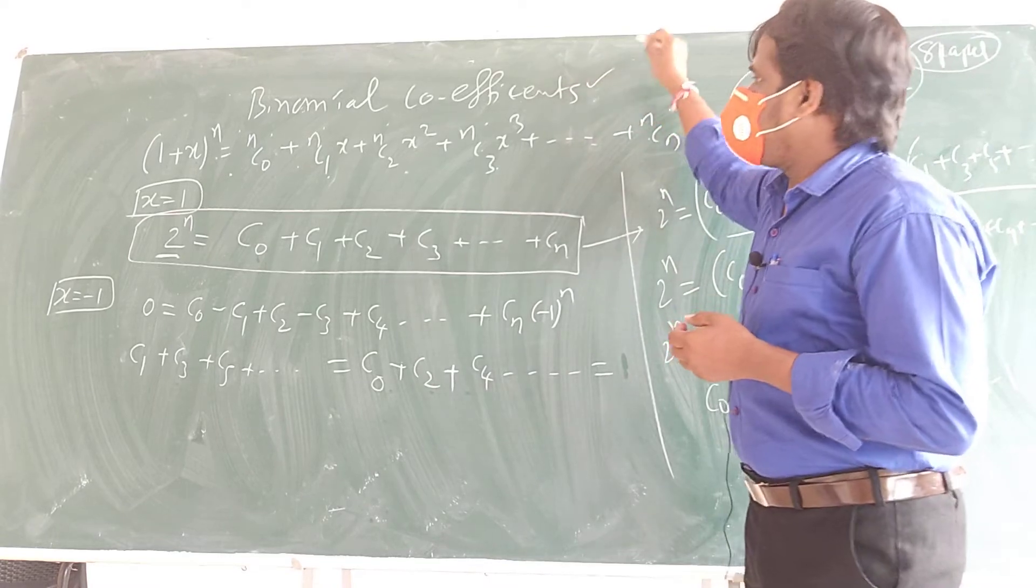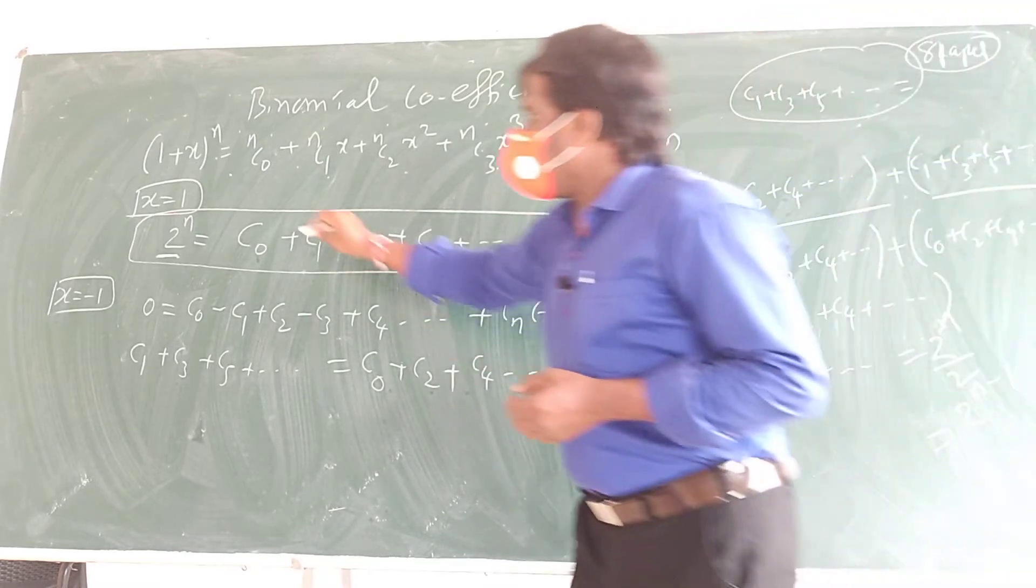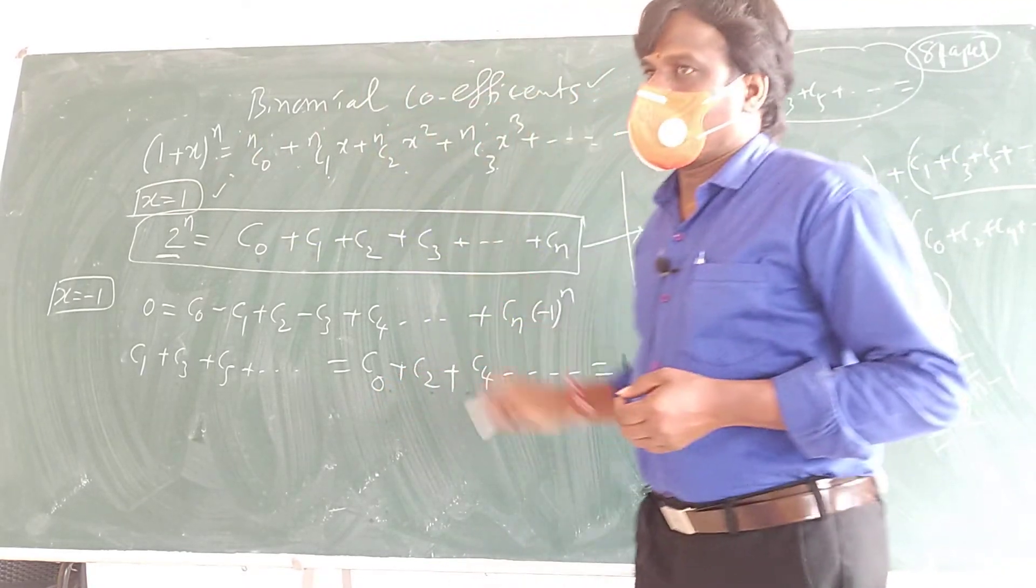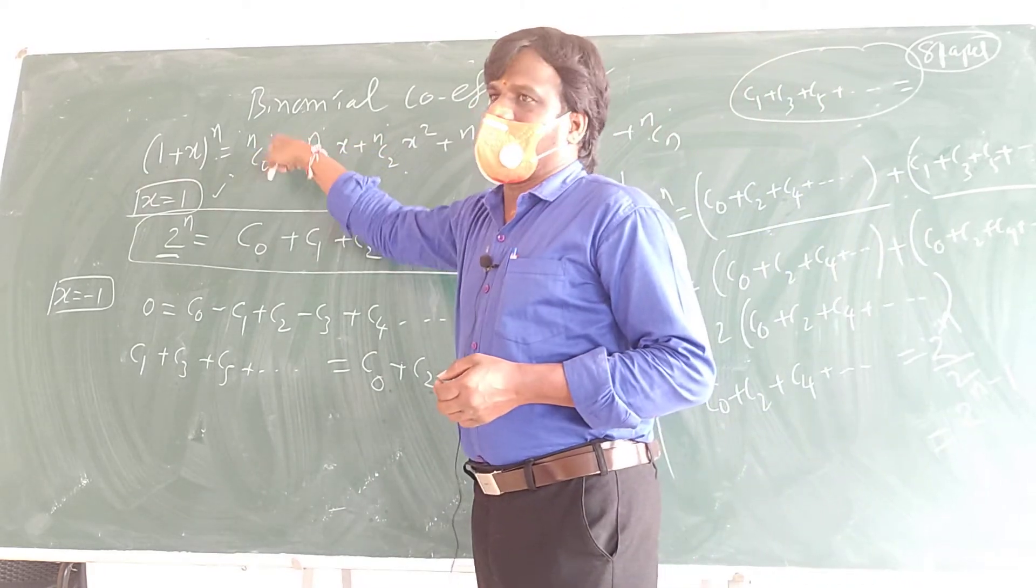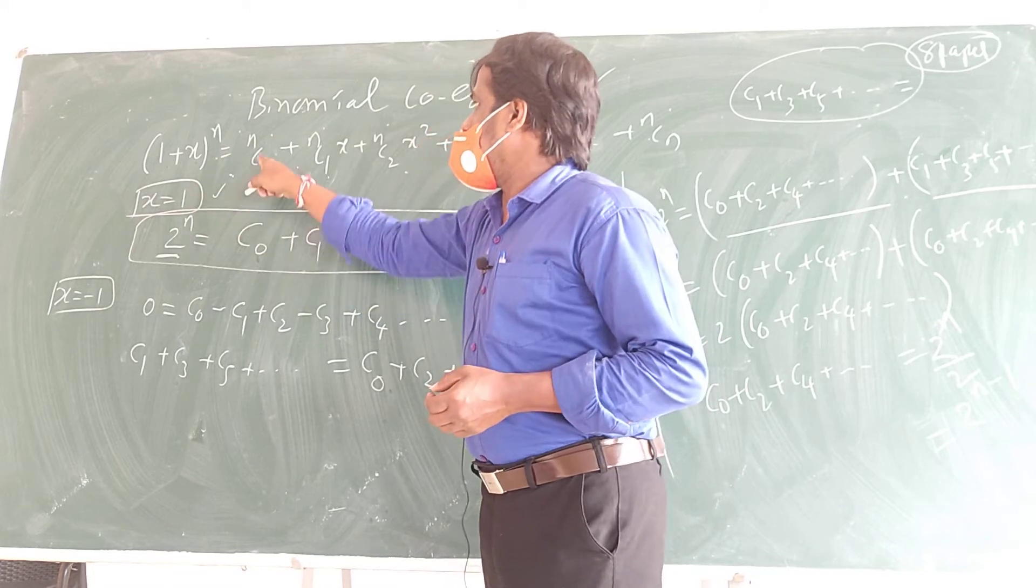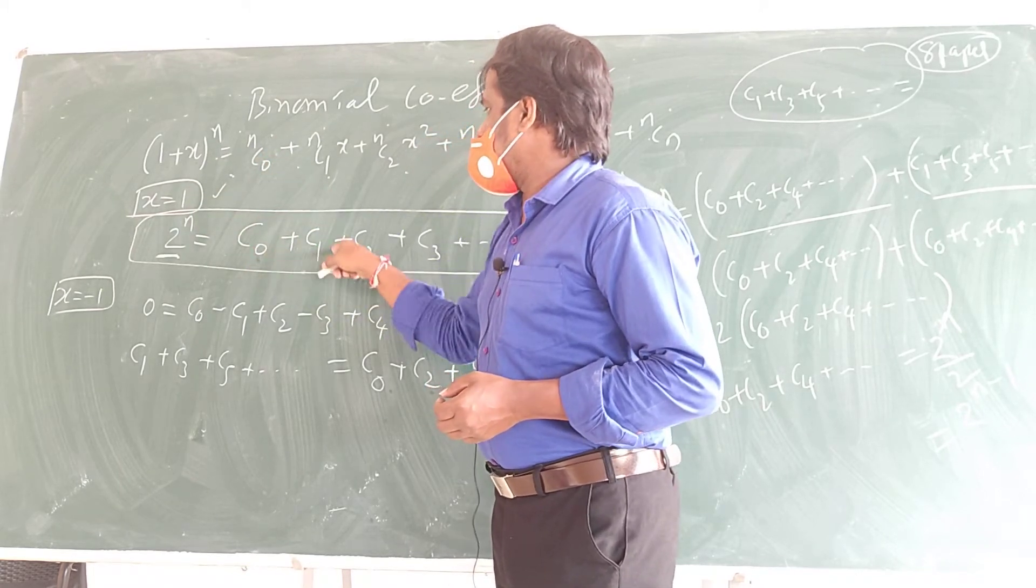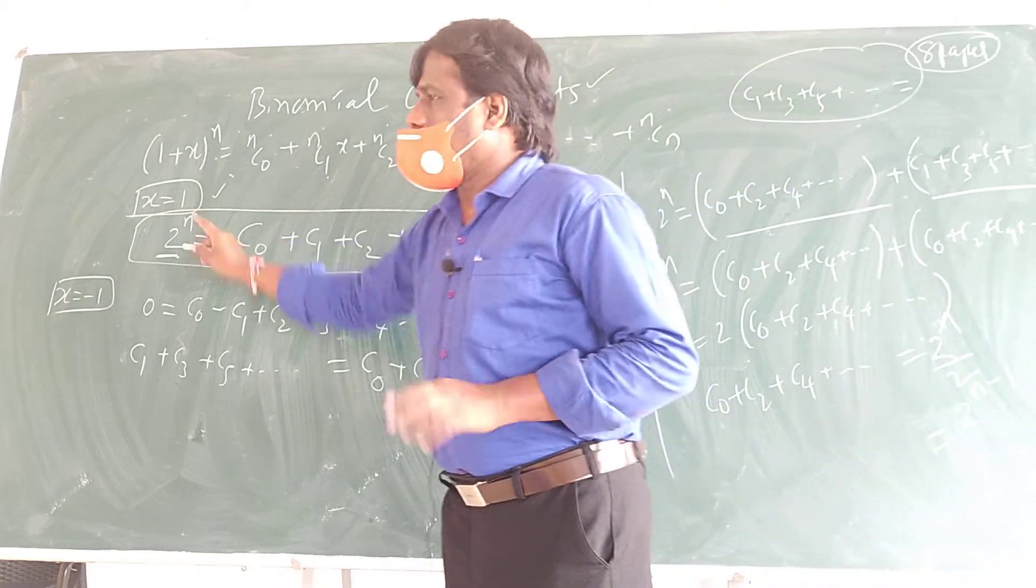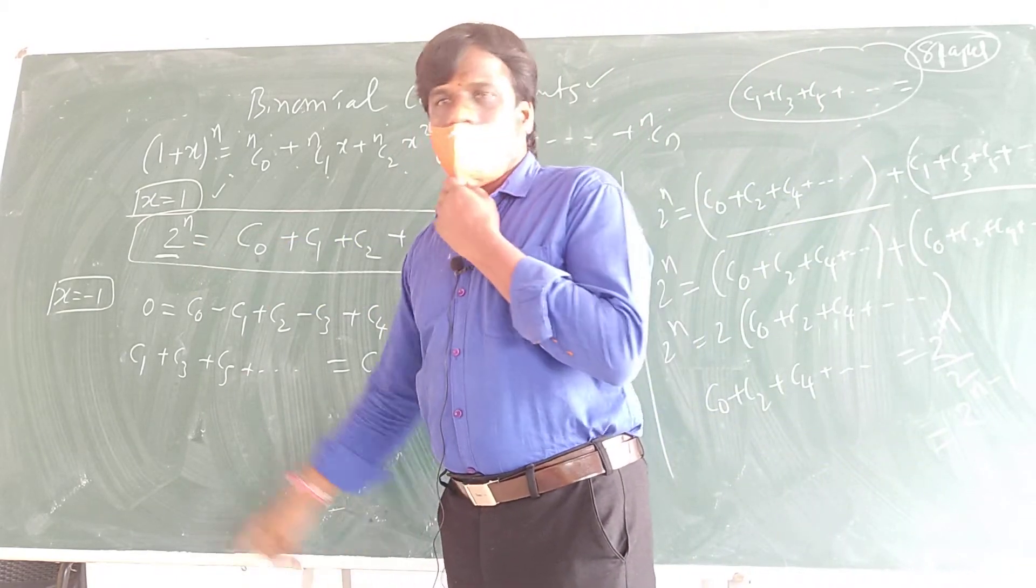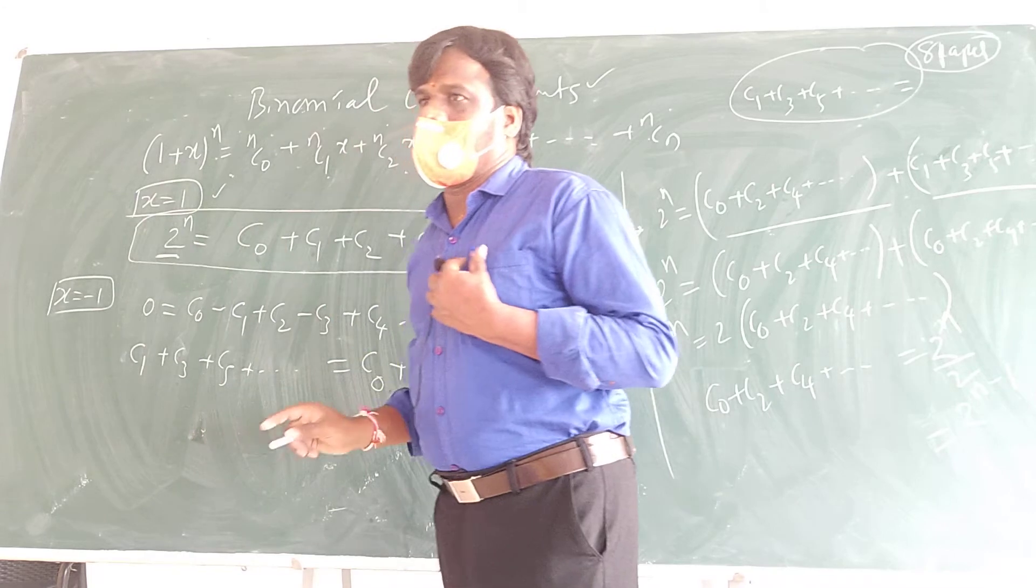We are discussing binomial coefficients. When I substitute x = 1, you will see in exam like this—you will not see in n format. So if I substitute x = 1, I will get C0 + C1 + C2 + C3 + ... + Cn, which we can write as 2^n. If I substitute here, 1 + 1 is 2^n.